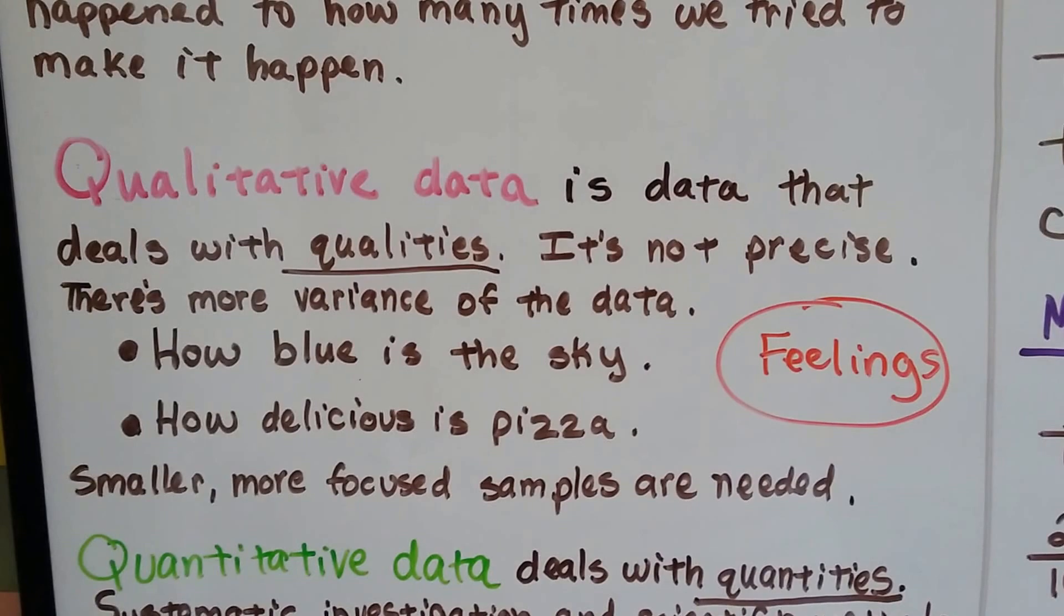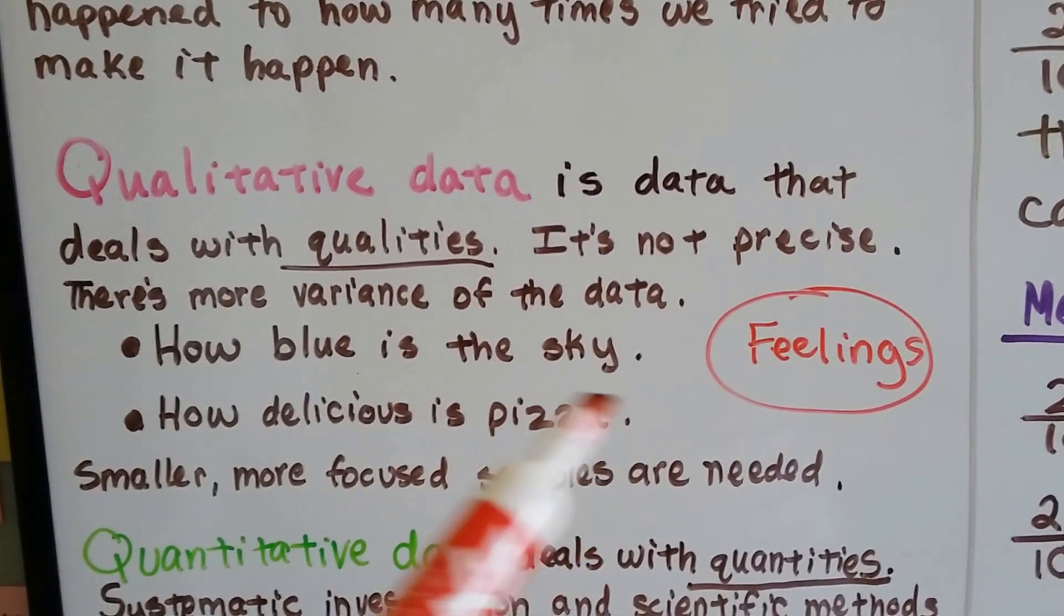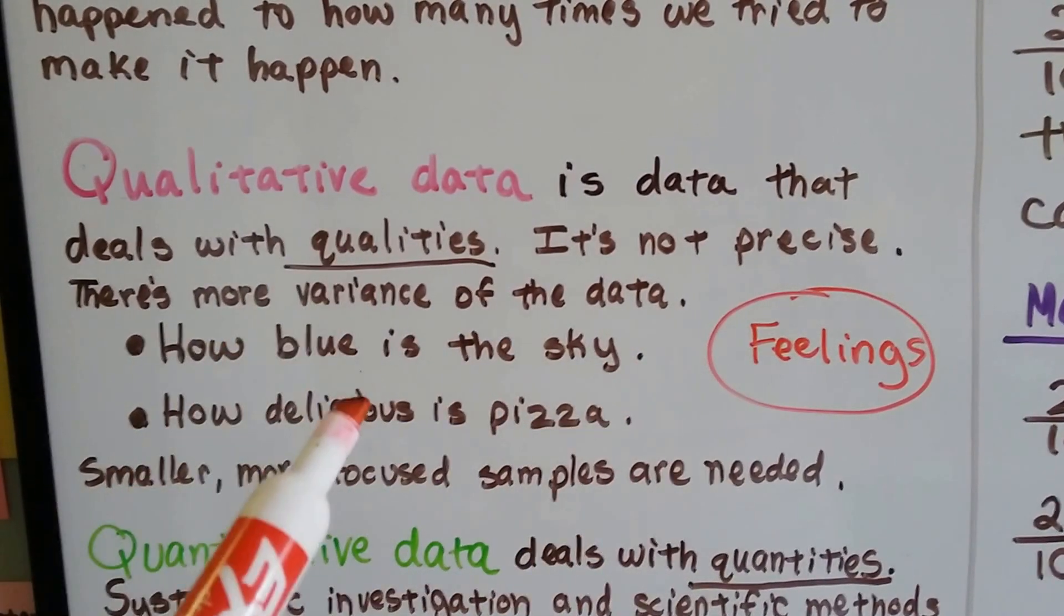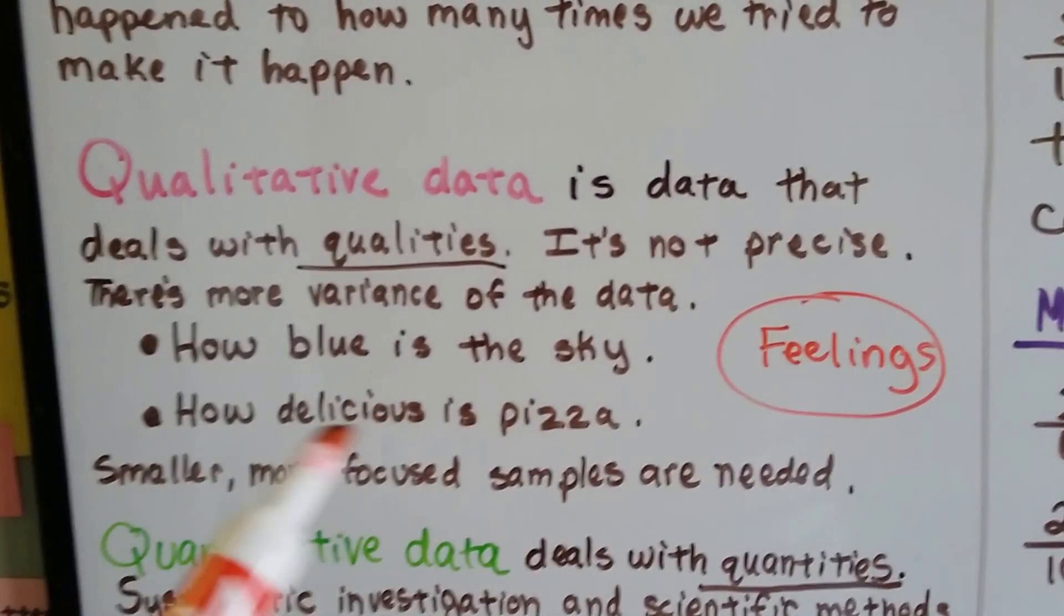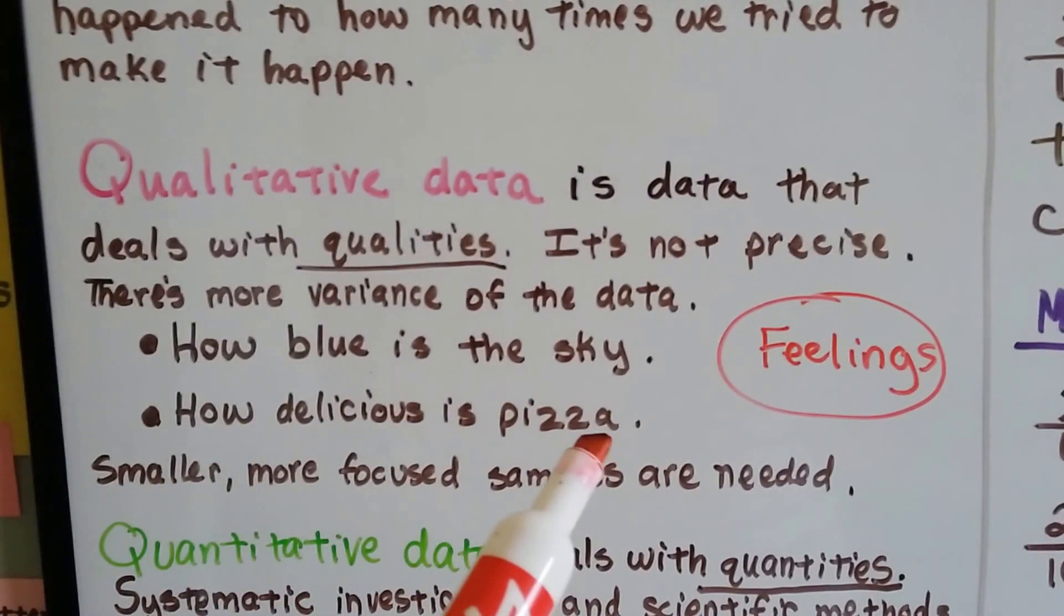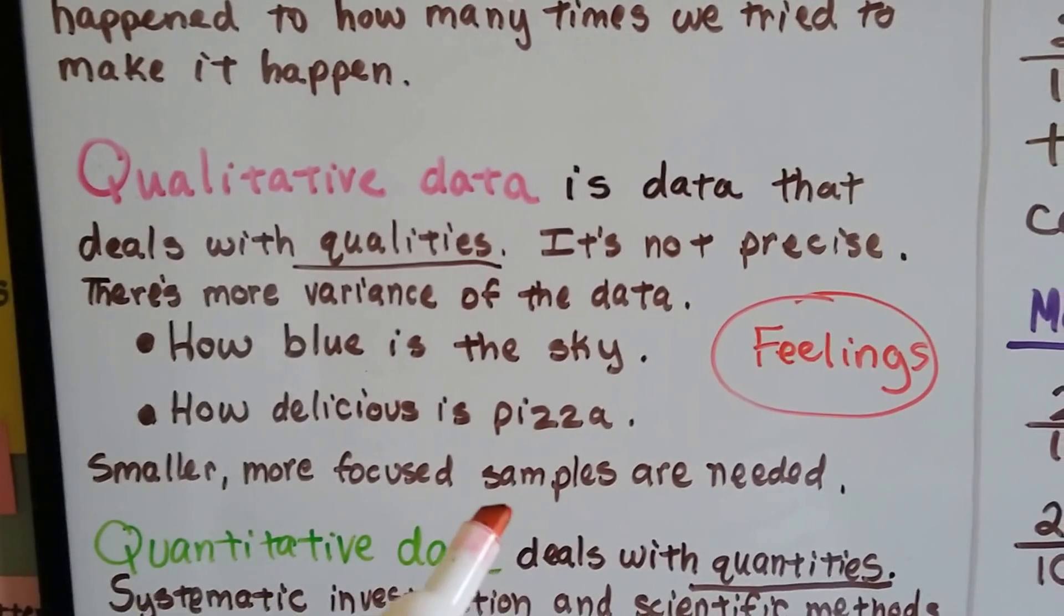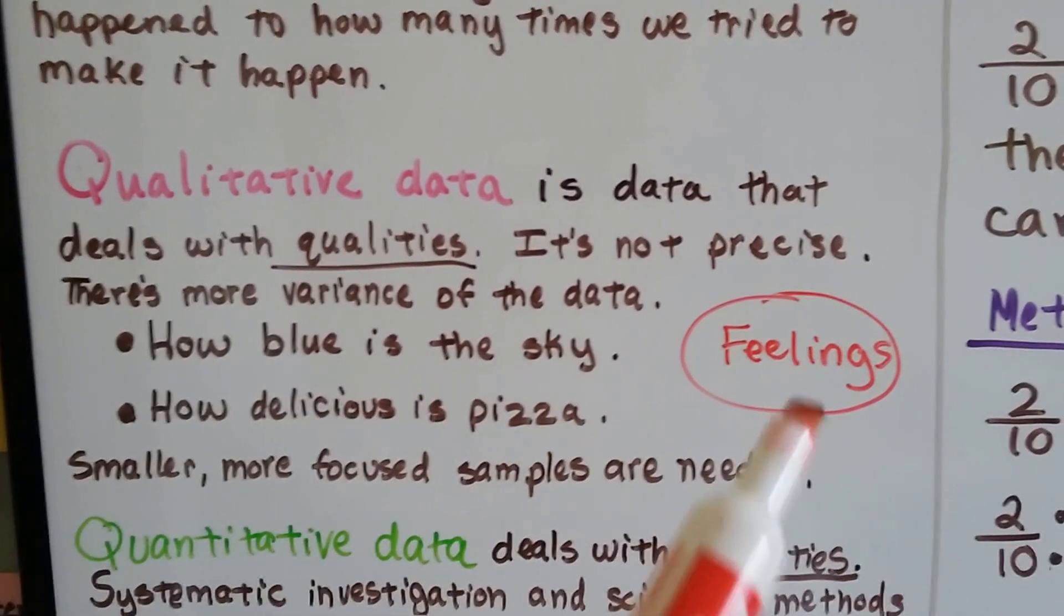If you ask somebody how blue is the sky and then you ask someone else how blue is the sky, you're going to get different feelings of what they think the qualities of blue are. Or if you ask someone how delicious is pizza, you're not going to get the same answer from everybody. Smaller, more focused samples are needed. That's qualitative data. That is feelings.